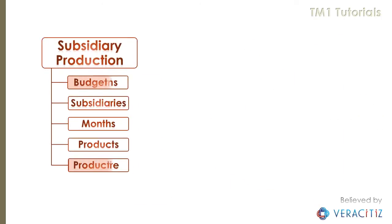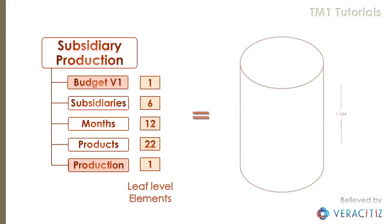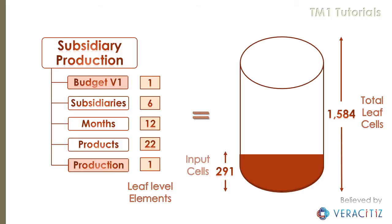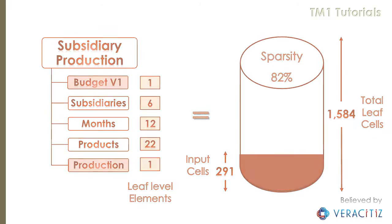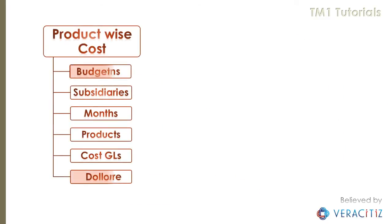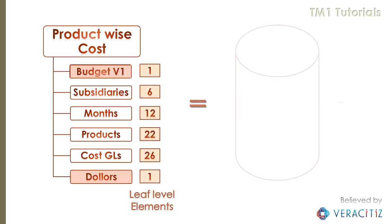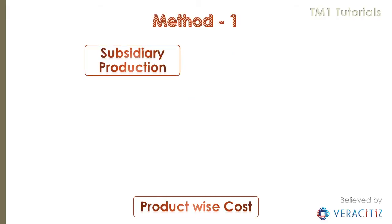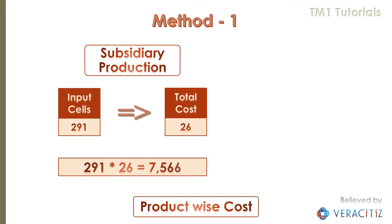On the other side, the subsidiary production view has approximately 1,600 leaf-level cells, out of which only 291 cells have data, resulting in 82% sparsity. And finally, the product-wise cost view has approximately 41,000 leaf cells, and this particular view doesn't have any input values. By using Method 1, subsidiary production is feeding approximately 7,500 cells.